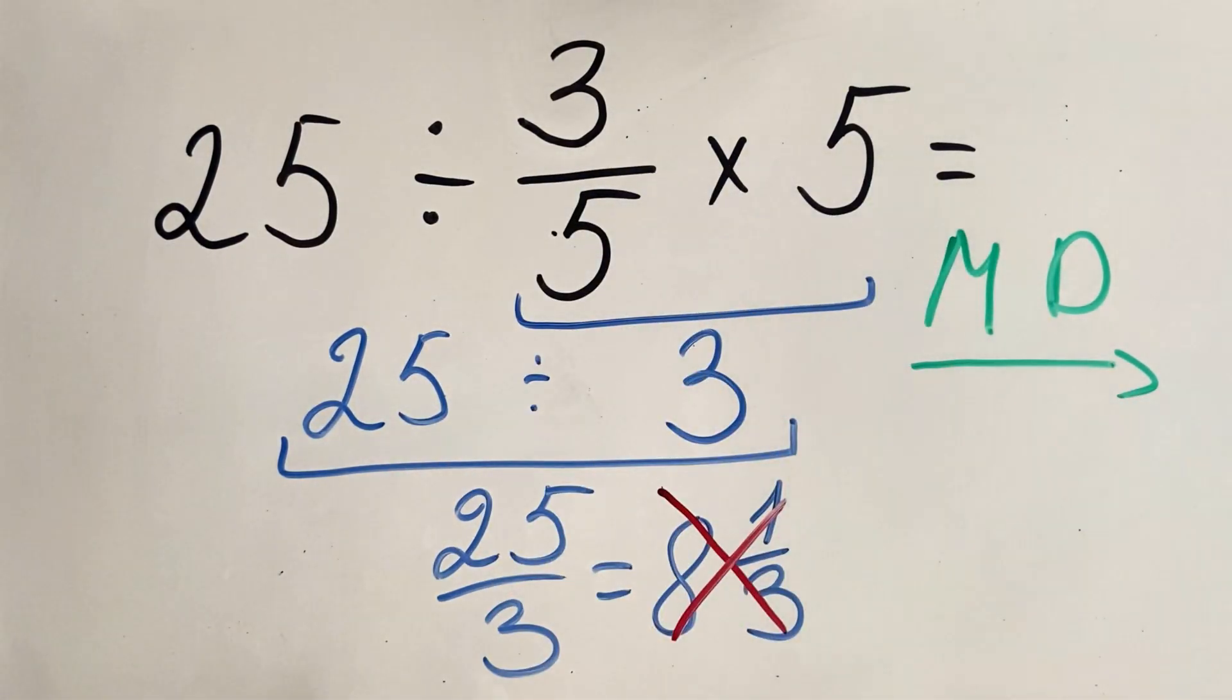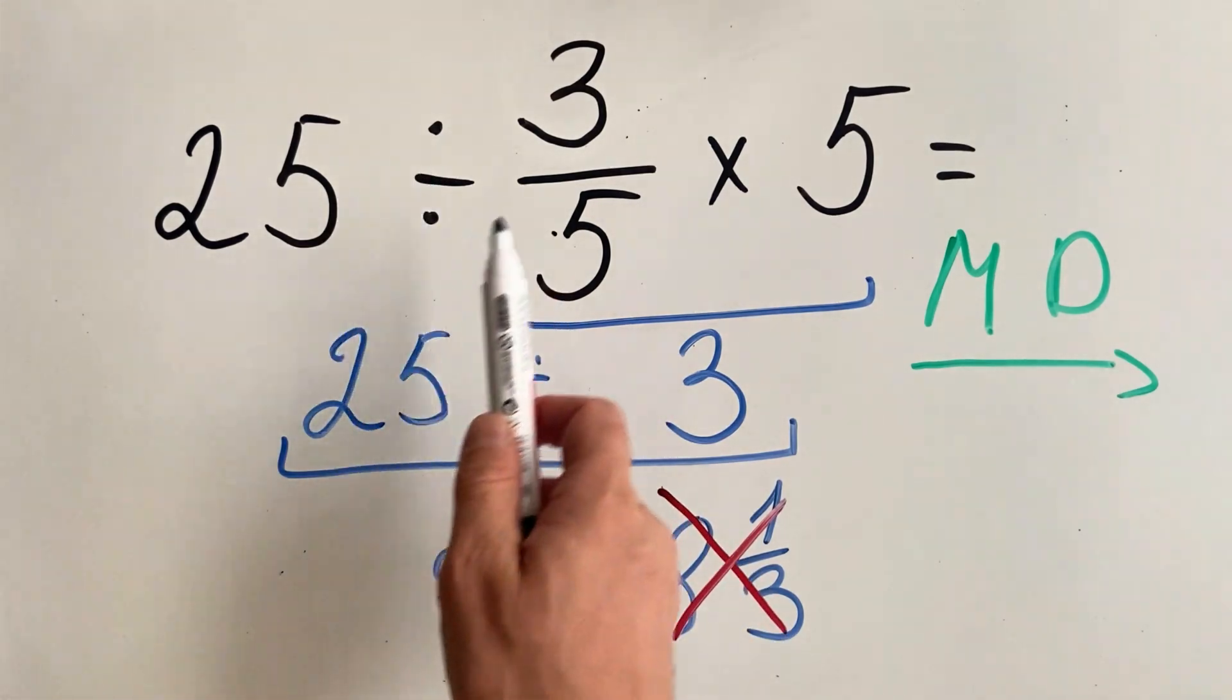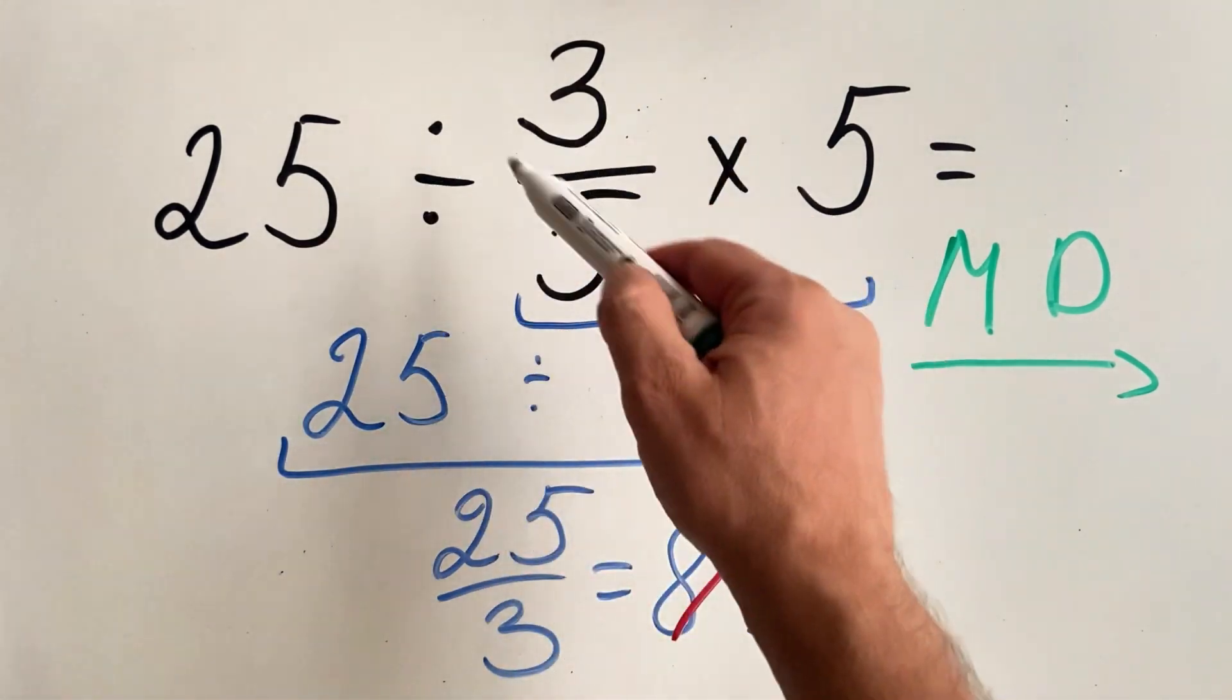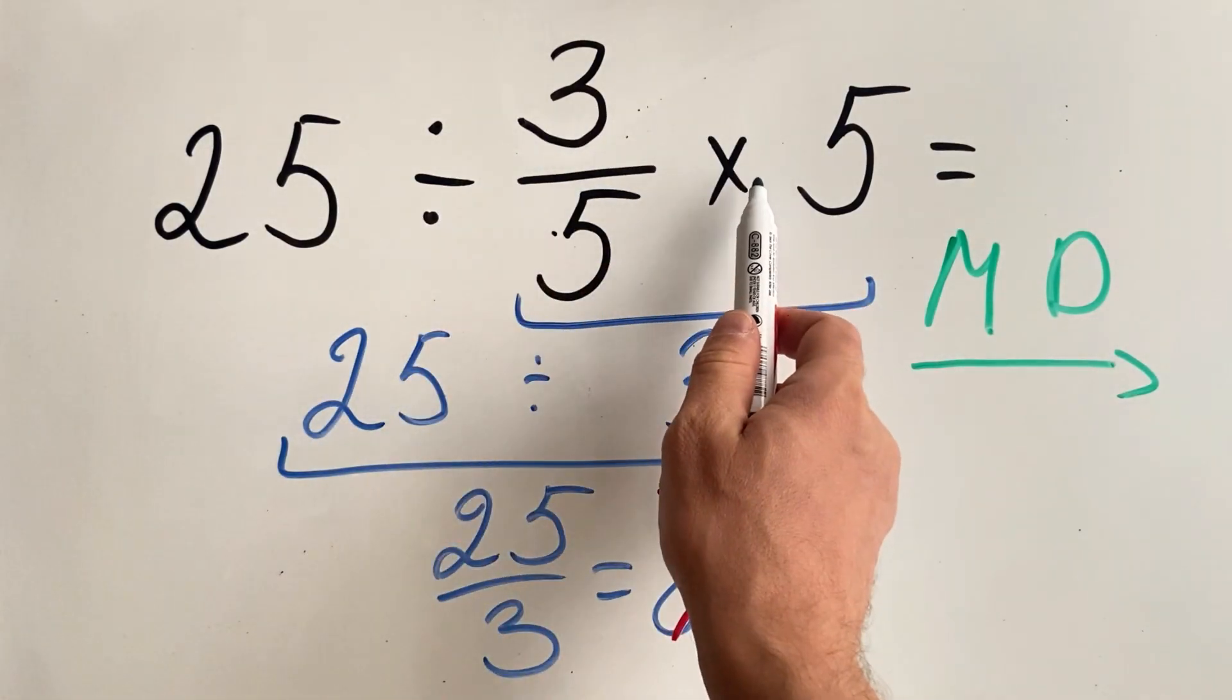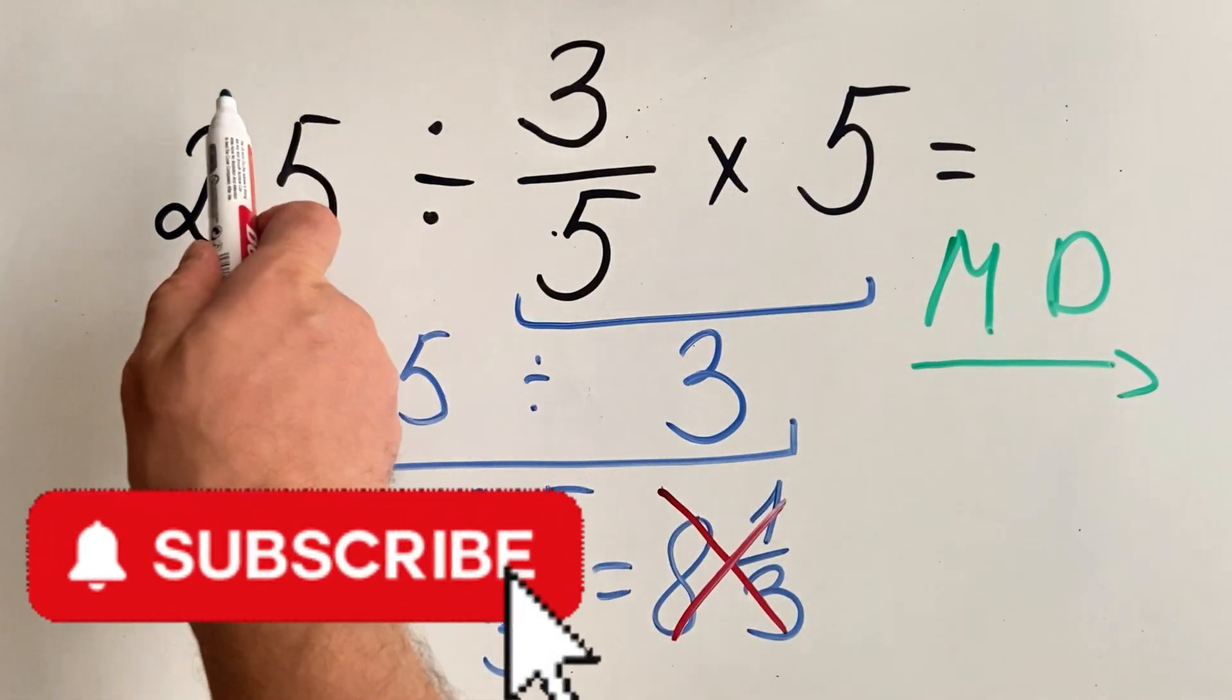So in our case, we must do division first and then multiplication, not the other way around. Division must be done first before multiplication from left to right.